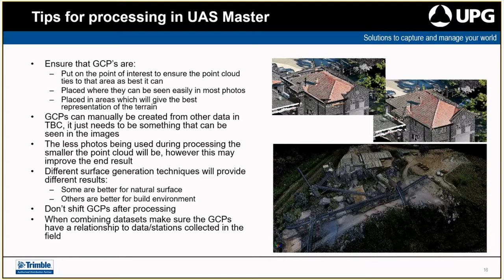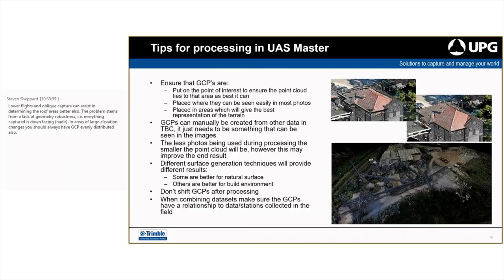GCPs can be created from manual data — in the roofline example, some points were taken from a scan on the edge of the building that could be seen from the sky. It doesn't need to be a formal recorded GCP like a cross. GPS measurement is not essential — you can shoot GCP locations with a total station if you want. Just remember, it has to be in a spot that's not between buildings or under a tree — somewhere you can clearly see in all your photos, out in the open wherever possible, because it will make processing a lot easier.